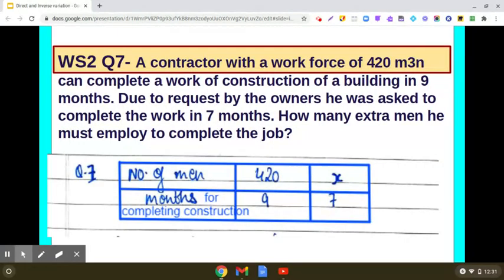Let us make the table. In the first row, we will write down the number of men, and in the second row, we will record the months required for completing the construction. As per the question, 420 men are required for completing the construction in 9 months, and we assume that x number of people are required for completing the construction in 7 months.